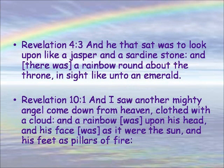In Revelation 4.3, the Greek word for rainbow is iris — like iridescent — which gives us the idea of many sparkling colors, even in English. Revelation 10.1: 'And I saw another mighty angel come down from heaven, clothed with a cloud, and a rainbow was upon his head, and his face as it were the sun, and his feet as pillars of fire.'